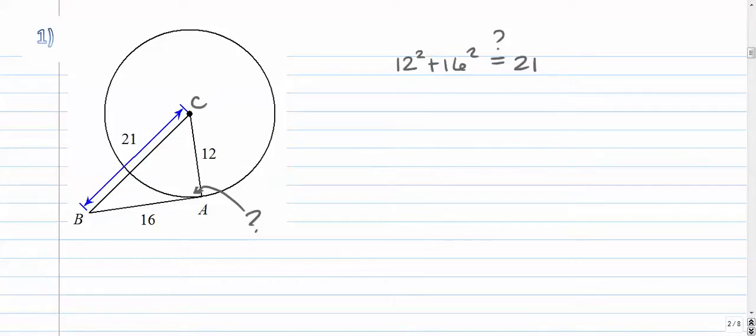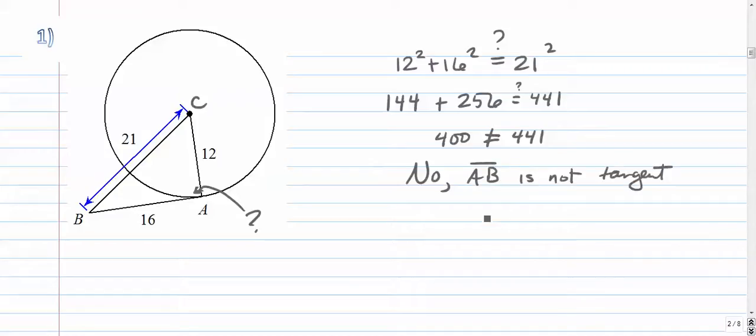We're going to solve this. So we got 144 plus 16² is 256. And is that equal to 441? Let's see. 256 plus 144 is 400, which does not equal 441. So the answer to this is no. Segment AB is not tangent to circle C. So in that case, the angle is not 90 degrees.